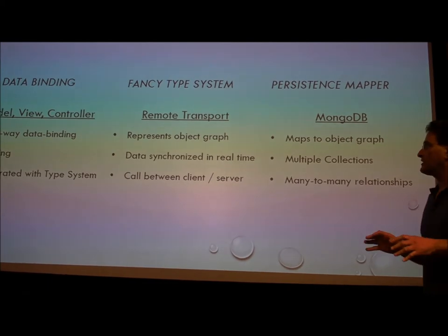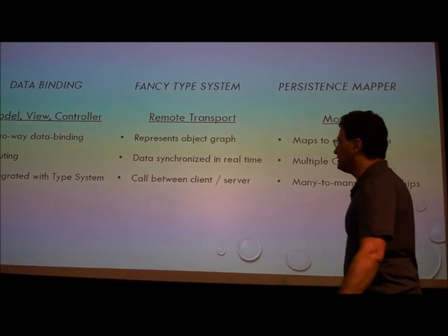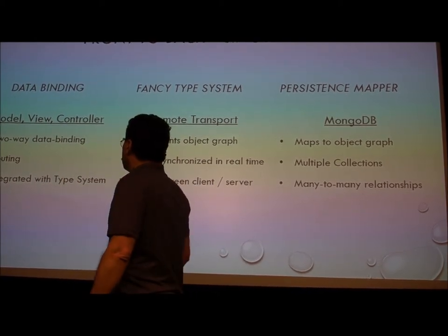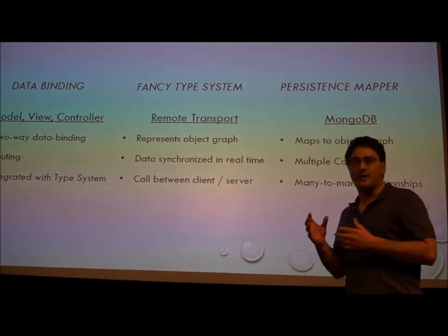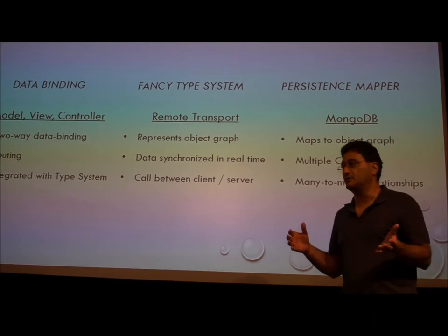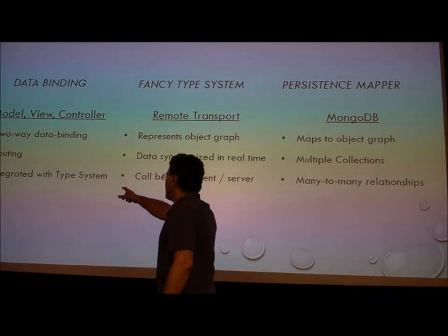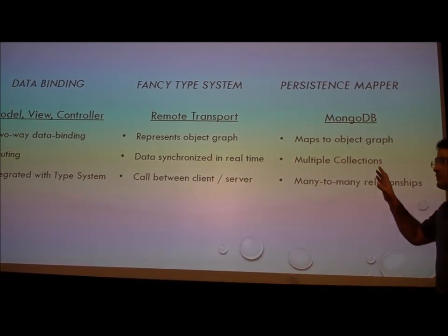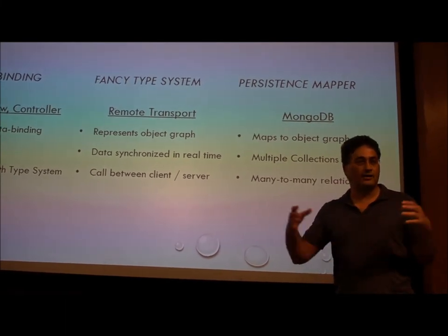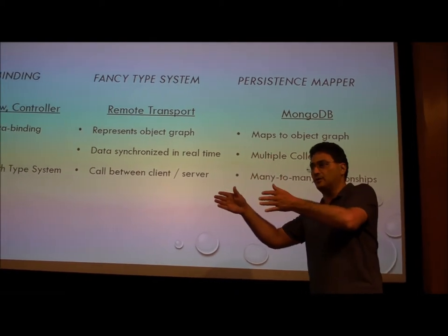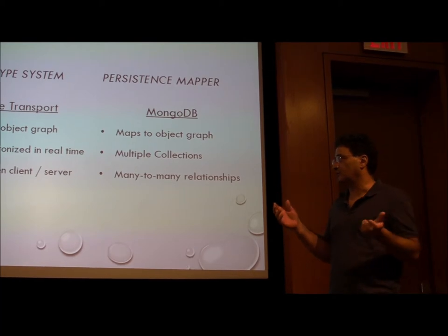Amorphic is a framework which is really about building front-to-back applications, single-page applications. There are really three main parts to it. There is a data binding component that implements a model-view-controller. It has two-way binding, conditional statements, iteration, and routing. This is the same kind of features that you would have in other data binding frameworks such as Angular. Where it differs from Angular is that the data binding is tightly integrated with the type system. The type system is really the heart of what makes everything work in Amorphic — it represents an entire object graph and the relationships between objects, which is what allows it to synchronize everything as you make calls between the client and the server.